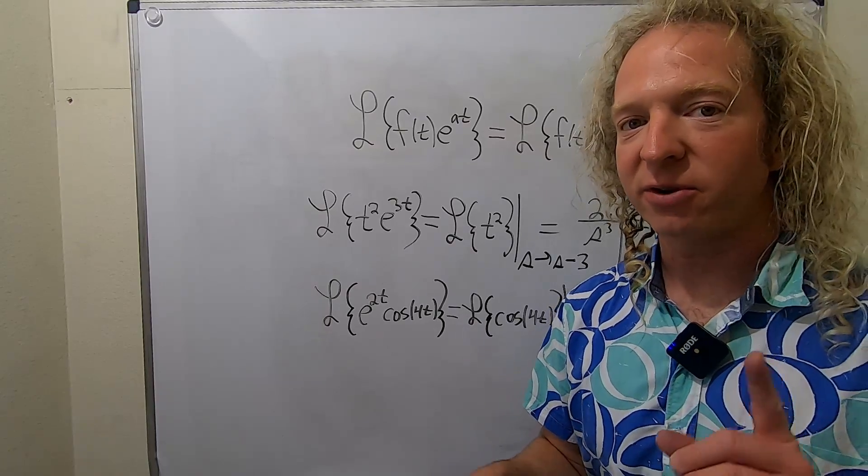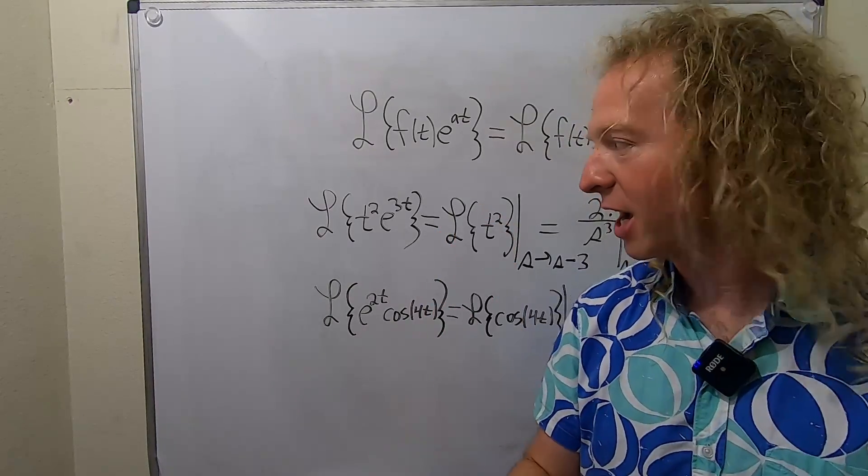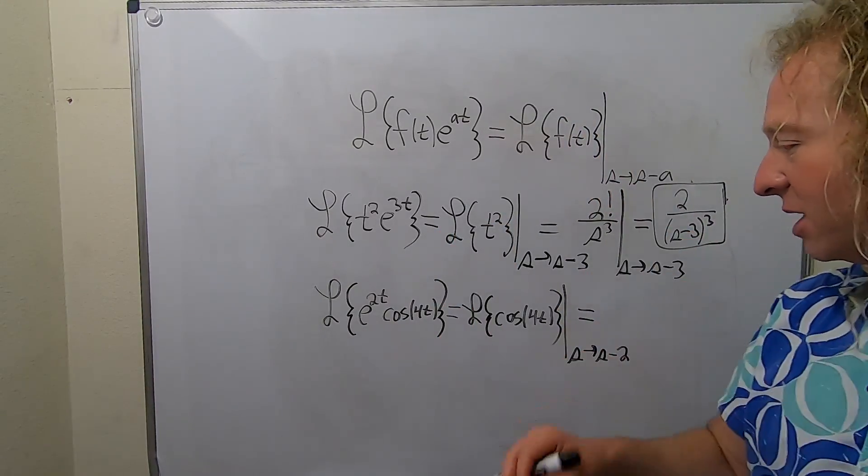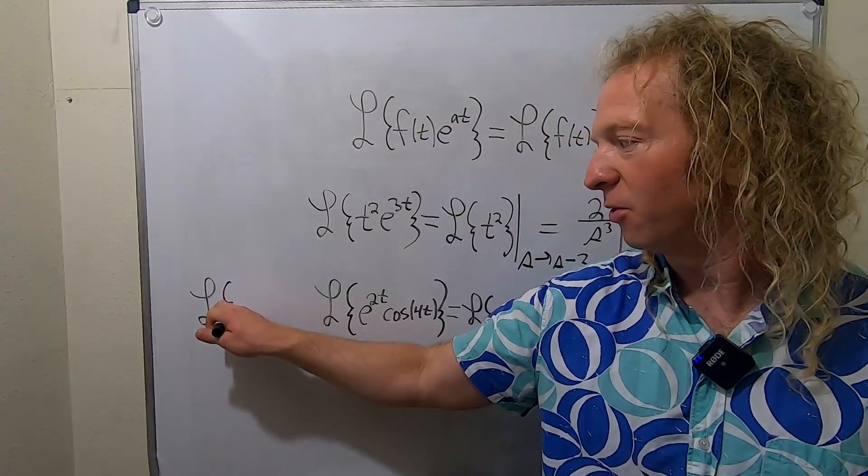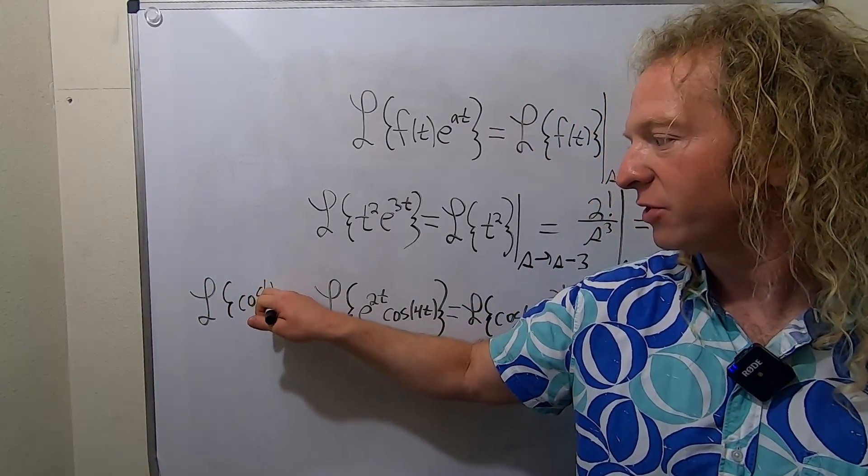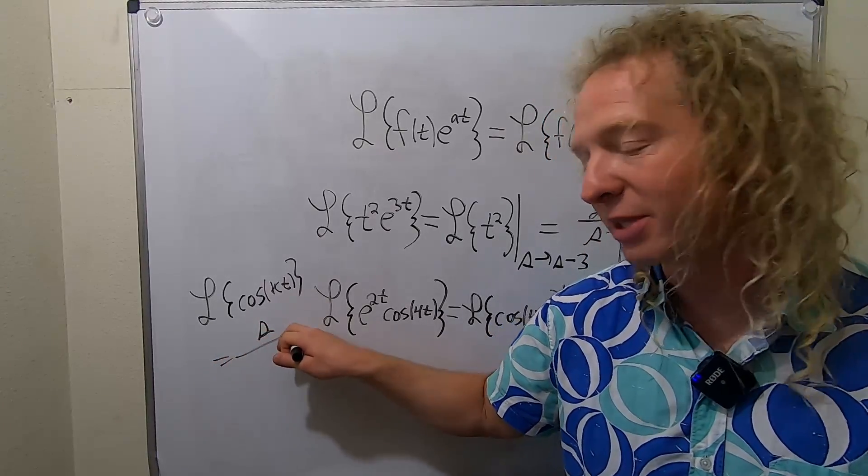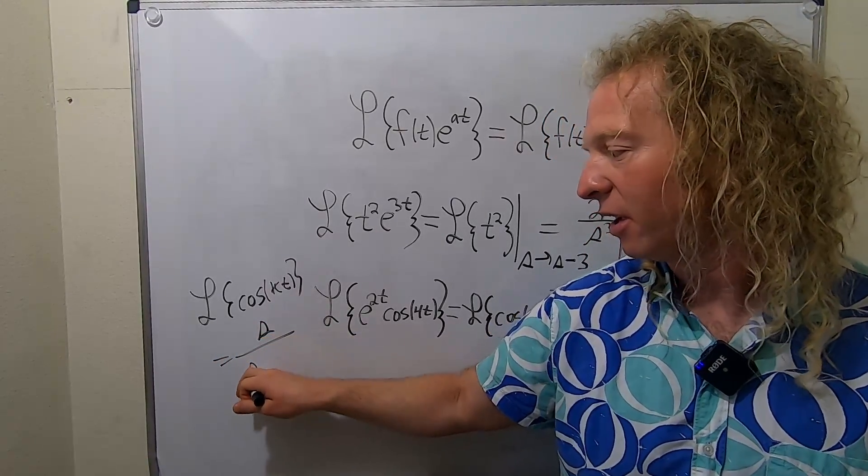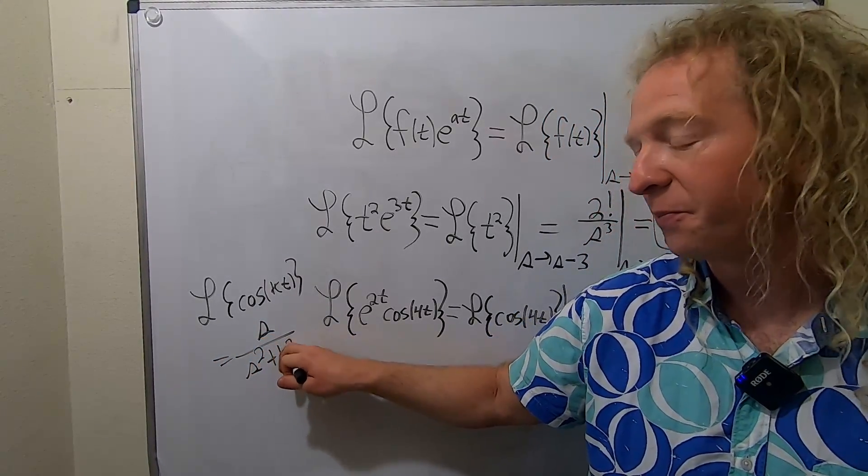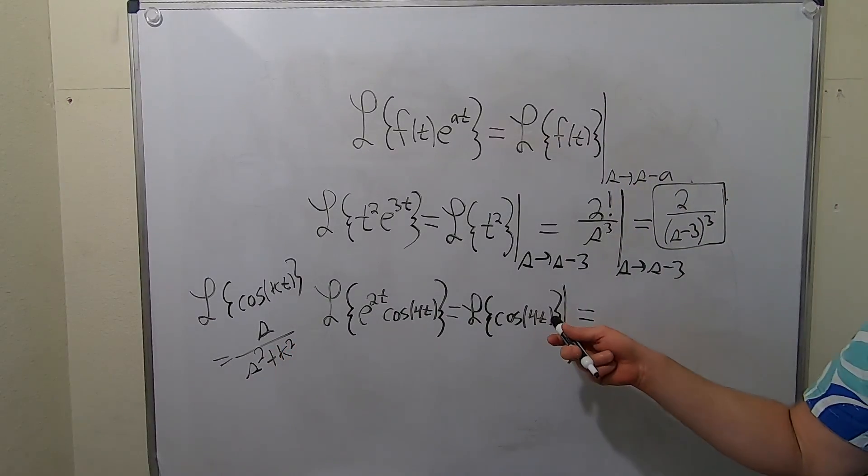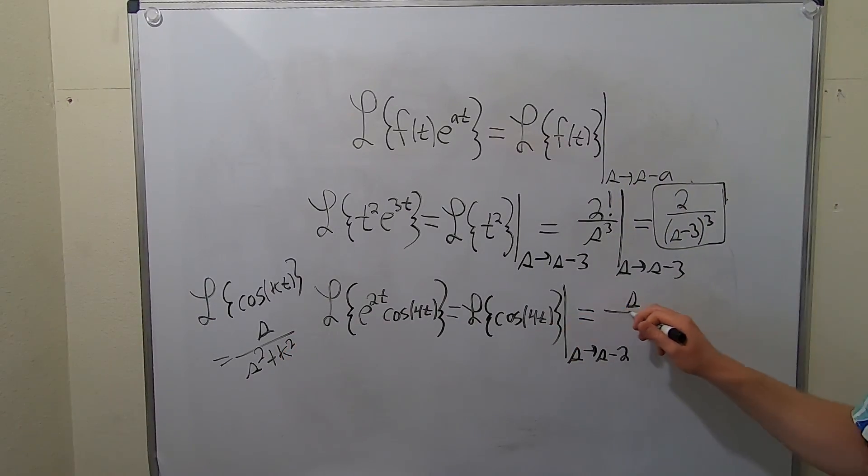The Laplace of cosine, well, just remember cosine has the s. So let me write the formula over here in case you don't remember. The Laplace of cosine kt, that's going to be s because cosine has the s. The sine has a k here and it's s squared plus k squared. So in this example here, it's s over s squared plus 4 squared, so plus 16. And then we still have our beautiful shift, so s to s minus 2.